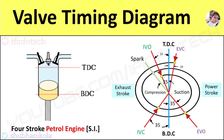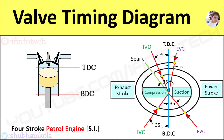Here I have drawn the sketch of the actual valve timing diagram for the SI four-stroke engine. In this cycle, there are mainly four strokes: suction stroke, compression stroke, power stroke, and exhaust stroke.